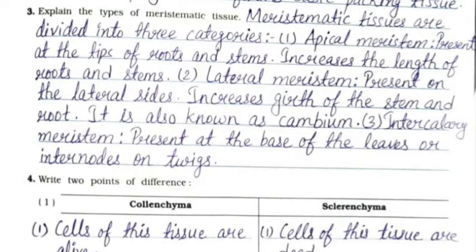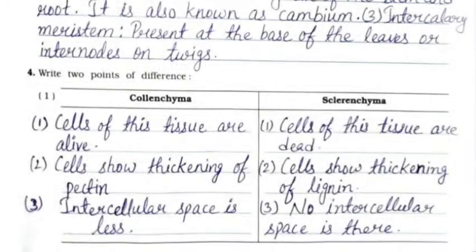Meristematic tissues are divided into three categories. First, apical meristem - present at the tips of roots and stems, increases the length of roots and stems. Second, lateral meristem - present on the lateral sides, increases girth of the stem and root, also known as cambium. Third, intercalary meristem - present at the base of leaves or internodes on twigs.